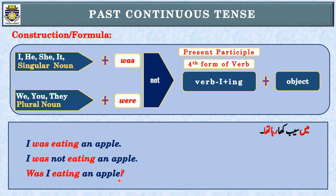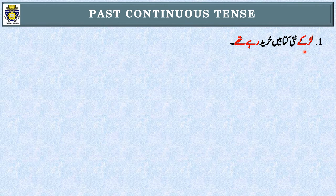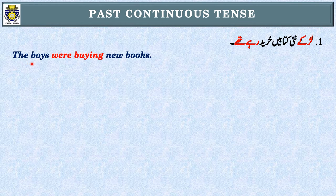Let's see some more examples. Sentence number one: لڑکے نئی کتابیں خرید رہے تھے۔ What is the first step? Identification of tense — 'رہے تھے' determine کرتا ہے کہ یہ Past Continuous Tense کا sentence ہے۔ Step two: subject کیا ہے — 'لڑکے'، جس کی English 'boys' ہے۔ Boys plural noun ہے، اس کے ساتھ we use 'were'۔ Third step: translation — The boys were buying new books.